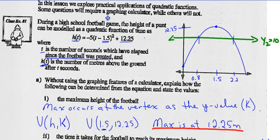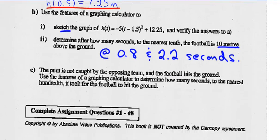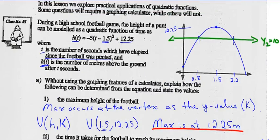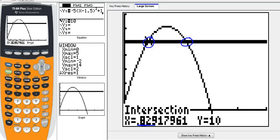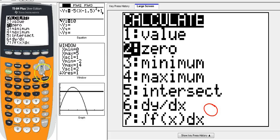Now let's go to part C. The punt is not caught by the opposing team, and the football hits the ground. Use the features of the graphing calculator to determine how many seconds to the nearest hundredth it took for the football to hit the ground. So what we're looking for now is the x-intercept. Where does the ball hit the ground? Right there. So use the graphing calculator feature to figure that out. Let's go back to our graphing calculator, and let's find that x-intercept. To do that, we go second function calculate. And now we're looking for a 0. So we're looking for the 0 of the function. Number 2. You can go down or just hit 2.